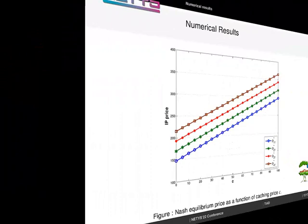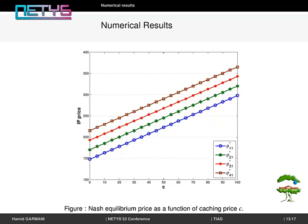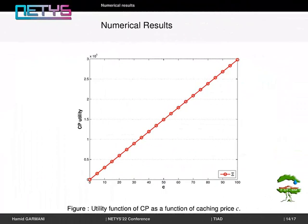Also, this plot shows the impact of caching price C on the Nash equilibrium price of several infrastructure providers. Then when caching price C increases, the Nash equilibrium price increases too. It comes from the fact that when the caching price is cheaper, infrastructure providers lower their prices to attract more users. On the other hand, when caching price is expensive, infrastructure providers need to increase their price to compensate the increase of the caching price.